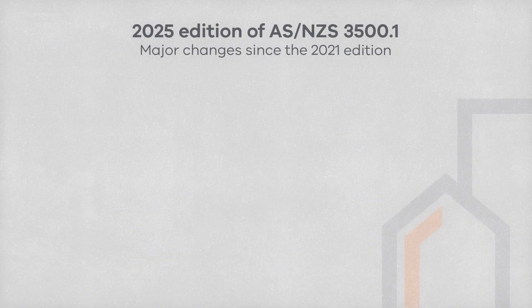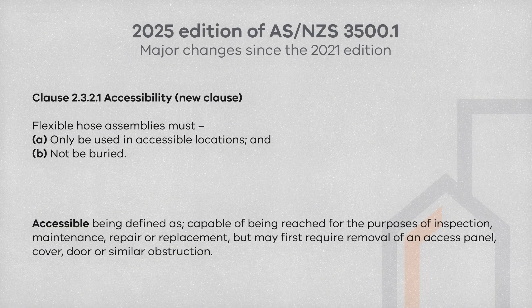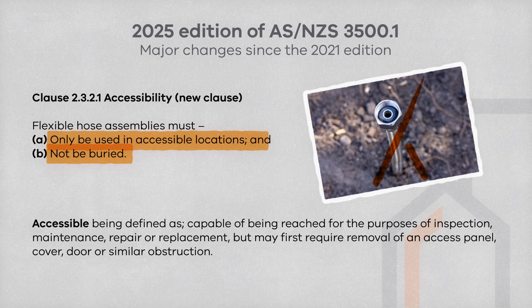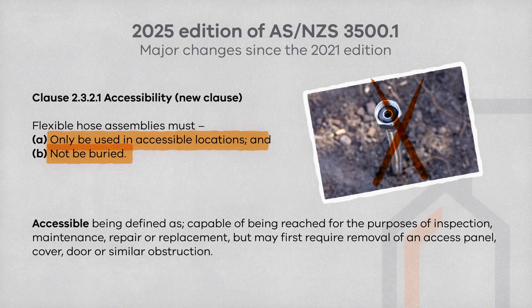Clause 2.3.2.1 goes over the accessibility requirements: flexible hose assemblies are only to be used in accessible locations and must not be buried. The term 'accessible' is defined in the standard as capable of being reached for the purposes of inspection, maintenance, repair or replacement, but may first require removal of an access panel, cover, door or similar obstruction.